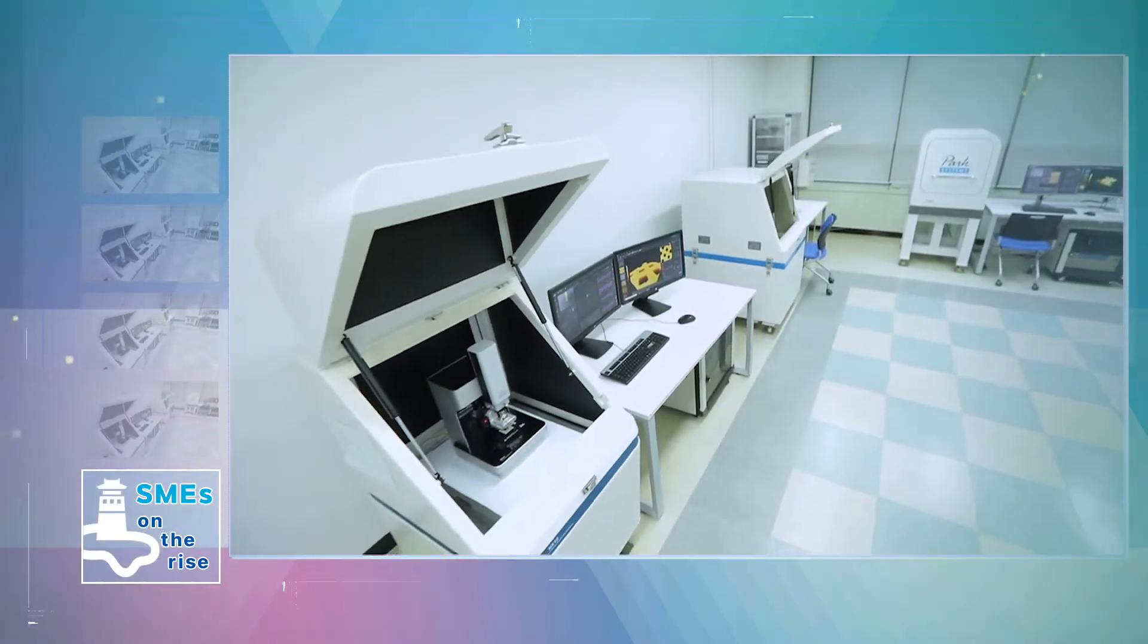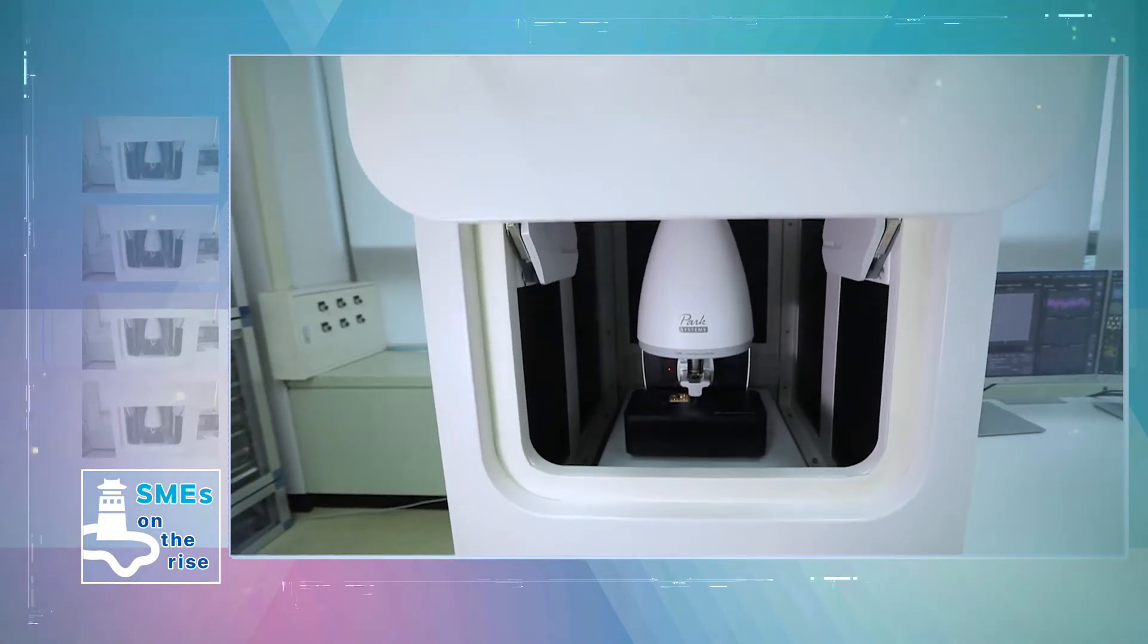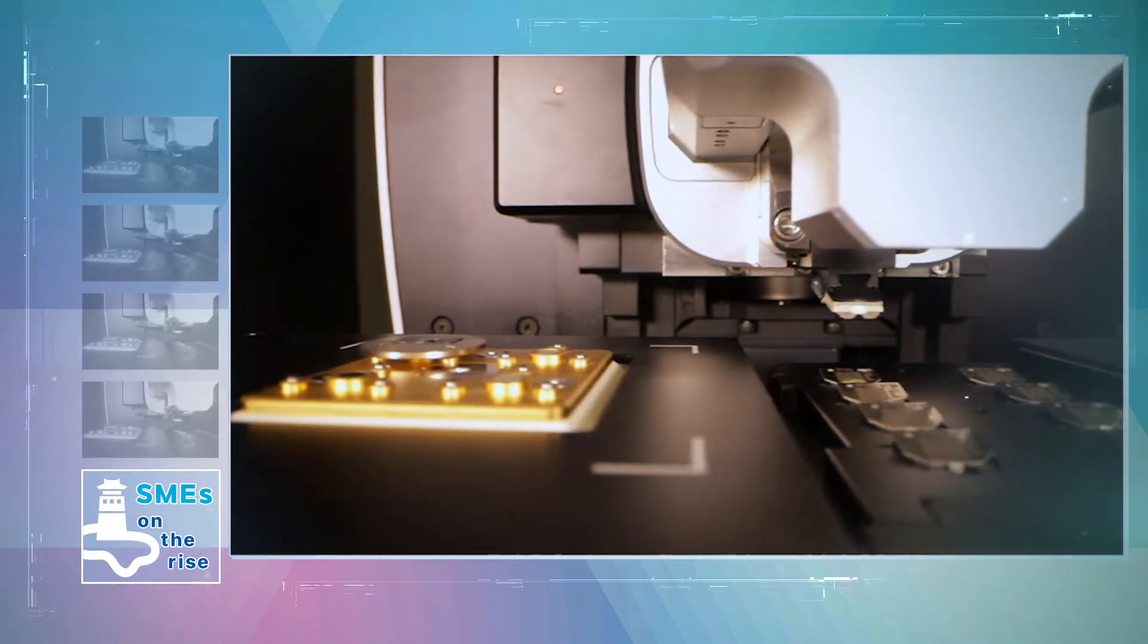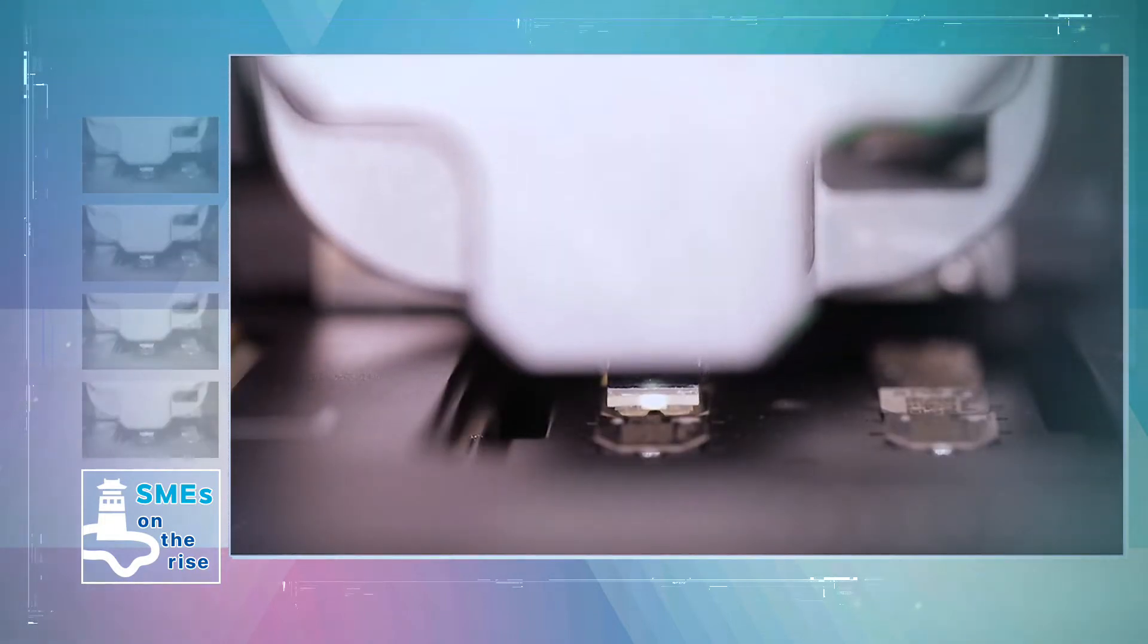Unlike optical and electron microscopes, which can only observe minute structures, atomic force microscopes can create and visualize 3D structures. Therefore, it is more convenient to understand the characteristics and structures of different objects.